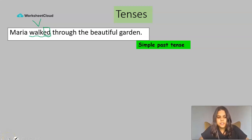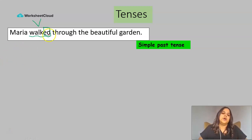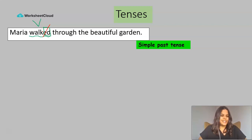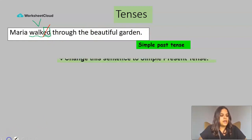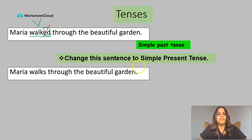Simple past tense describes an action that already took place. So we are going to convert the sentence 'Maria walked through the beautiful garden' to simple present tense. How are we going to do that? We are going to take the letters E and D out and try to read the sentence again. 'Maria walk through the beautiful garden' — that doesn't sound right. So let's add an S there. We are going to say 'Maria walks through the beautiful garden.' Change the sentence into simple present tense and we are left with 'Maria walks through the beautiful garden.'